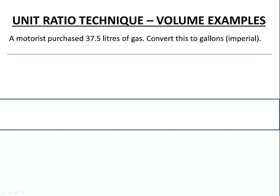Here's our unit ratio technique lesson for volume examples. In this situation we have a motorist who has purchased 37.5 liters of gas and we want this liters of gas converted to gallons, specifically imperial gallons.